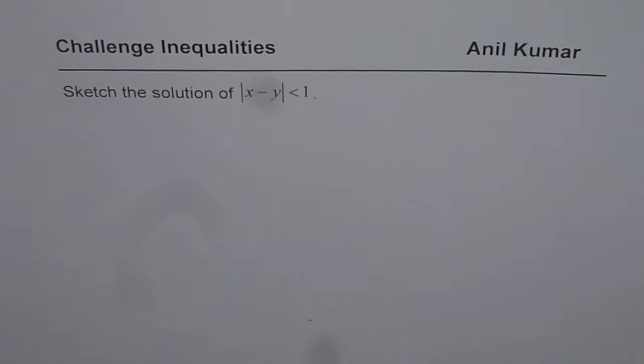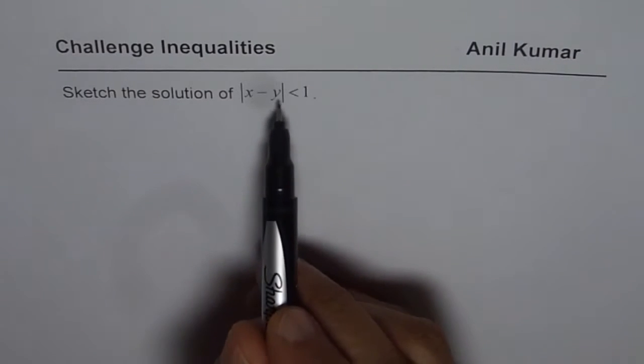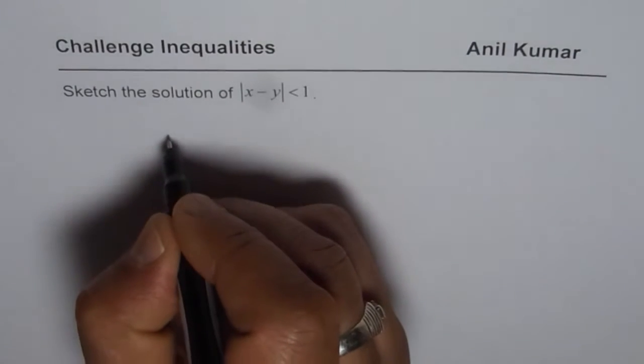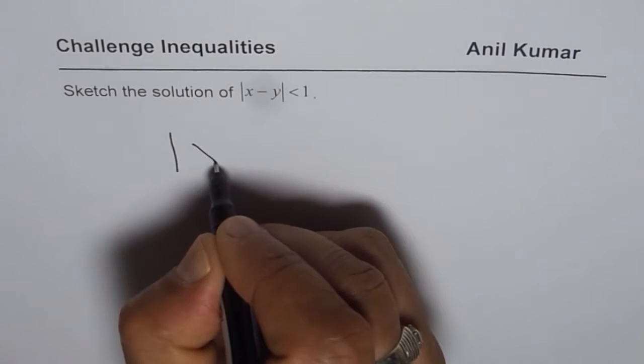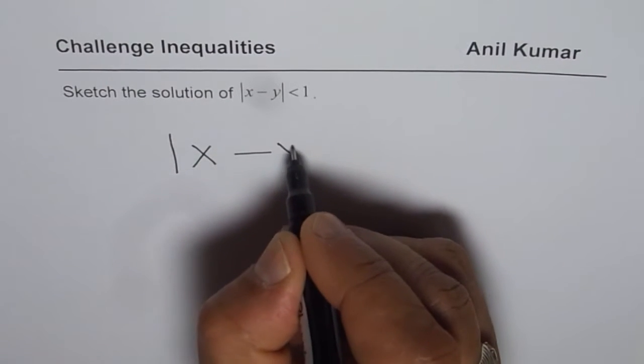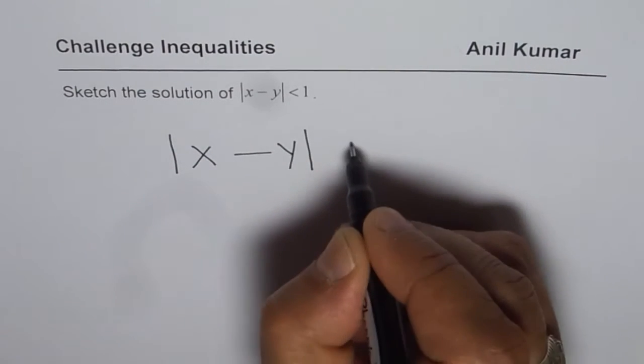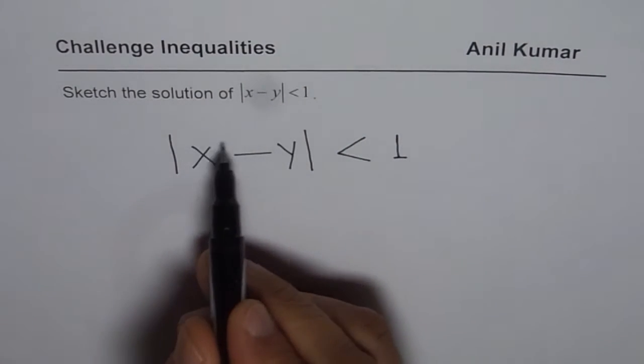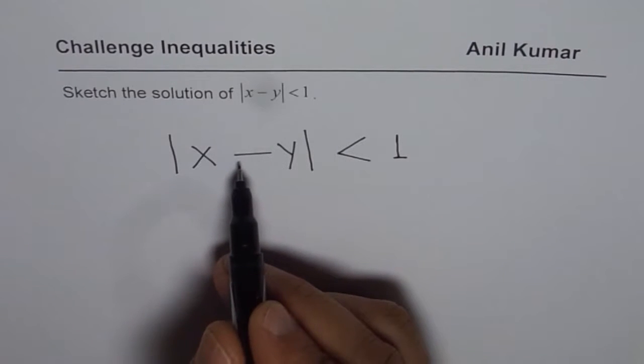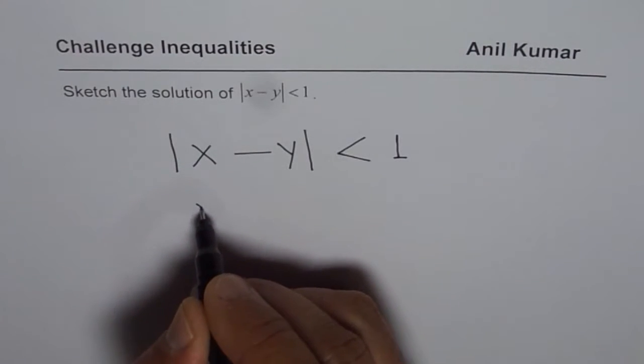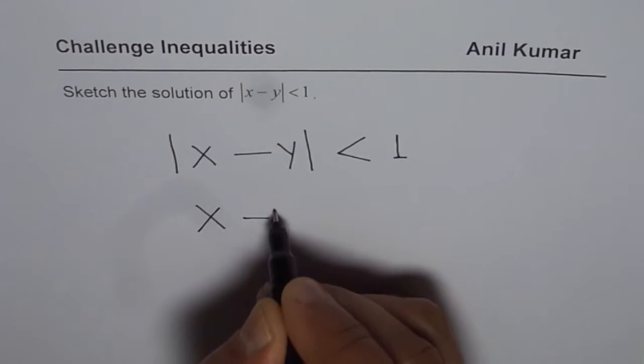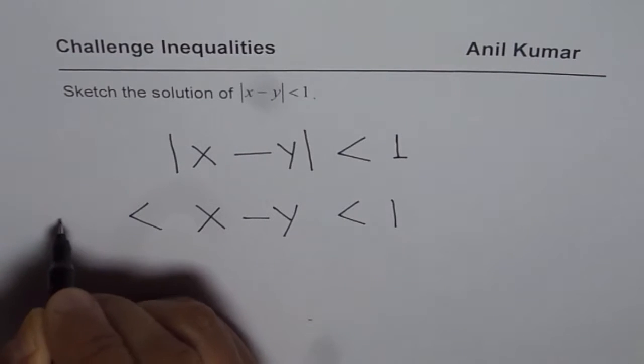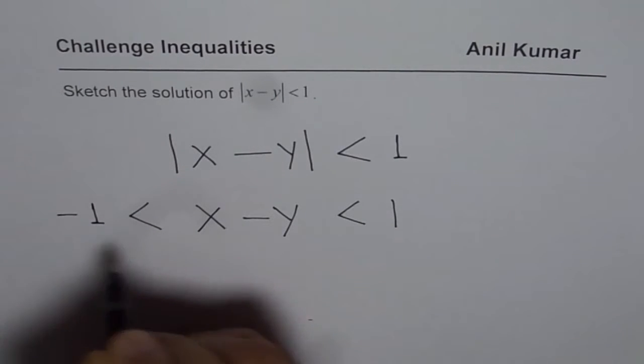Here is my solution. When we say absolute value of something is less than 1, what does it mean? Let me make big and bold writing of the same question. We have this, correct? It means what? It means that the inside term, it could be negative 1 also, do you see that? So, the inside term x minus y actually is less than 1 or greater than minus 1.